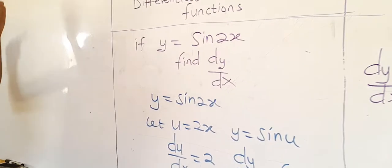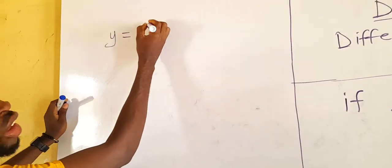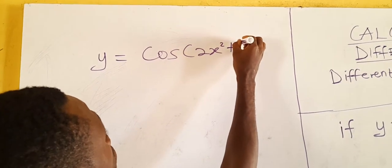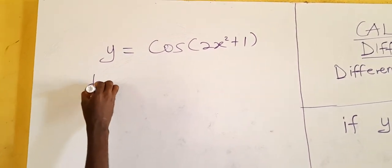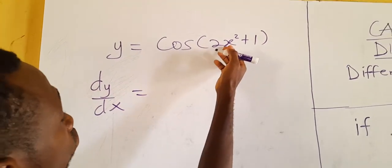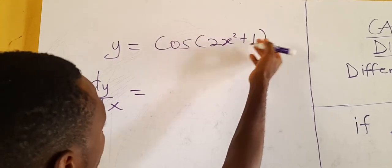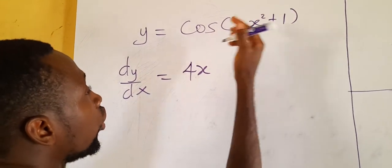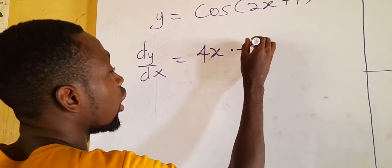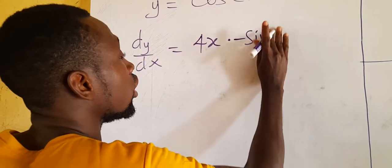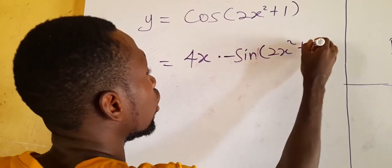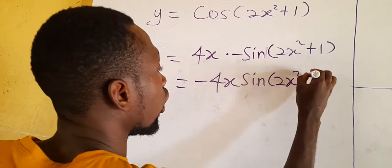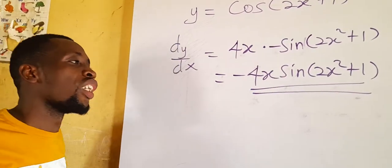If y equals cos(2x squared plus 1), find dy/dx. Differentiate the angle 2x squared plus 1: the differential of 2x squared is 4x, and the differential of 1 is 0. Then differentiate cos to get negative sin. Then repeat the angle 2x squared plus 1. So what you get is negative 4x sin(2x squared plus 1).